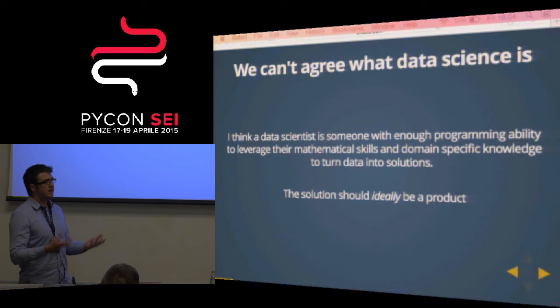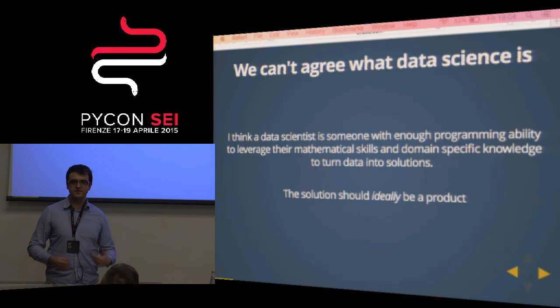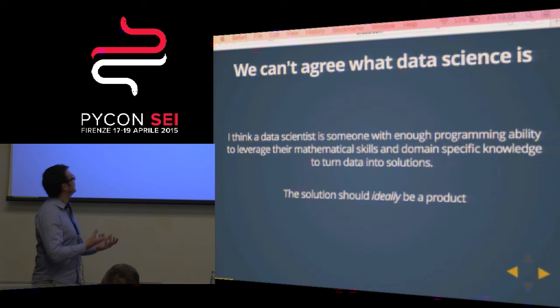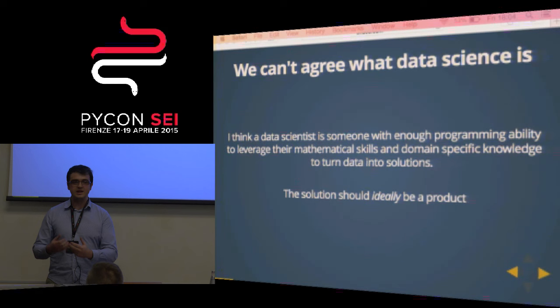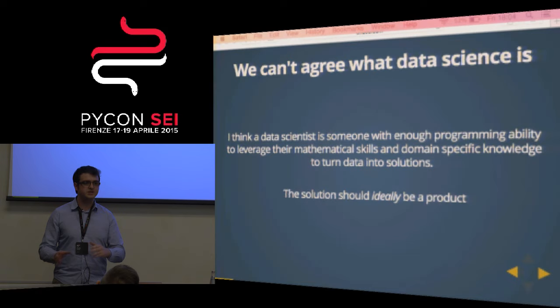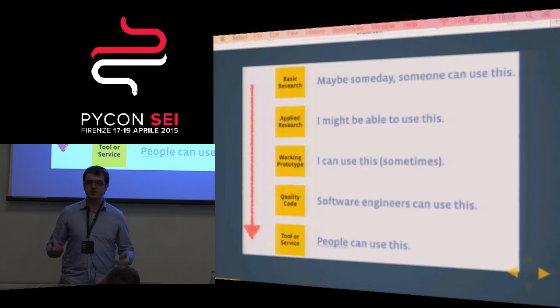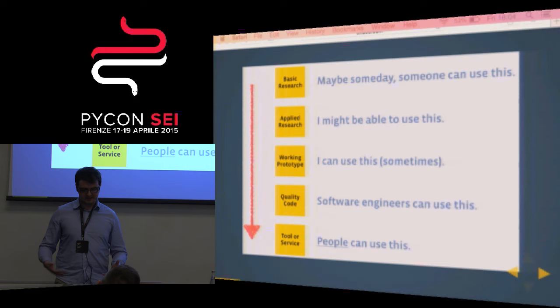We can't agree on a definition of data science — it's one of the common discussions at data science conferences. Plenty of vendors will give you a quick answer, which is mostly 'buy our product.' But I think it's mostly about transferring mathematics and domain-specific knowledge into a solution for end users. The solution should ideally be a product. Sean J. Taylor, a research scientist at Facebook who's been in the data science community for a while, talks about the idea of the pipeline.